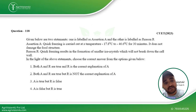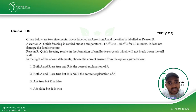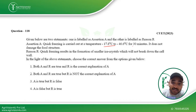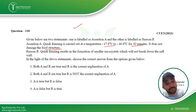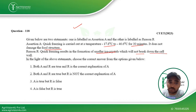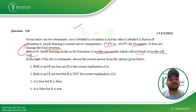Next, an assertion-reason based question: quick freezing is carried out at a temperature of minus 17.8°C to minus 46.6°C for 30 minutes — yes, correct. It does not damage the food structure because faster freezing causes less damage. Quick freezing results in the formation of smaller ice crystals which do not break down the cell wall — that is correct. Both assertion and reason are correct and the reason correctly explains the assertion, so the first option is the answer.